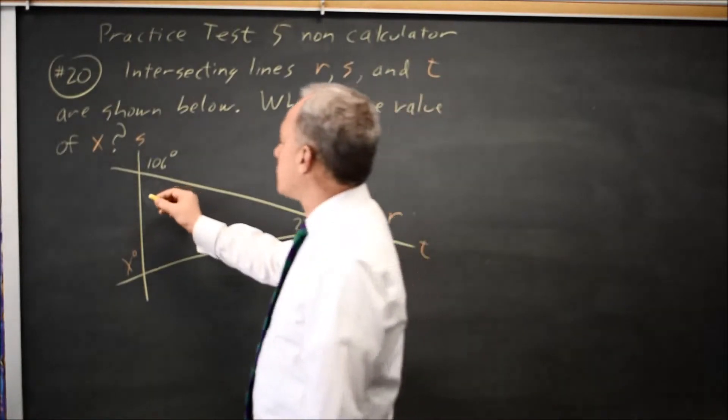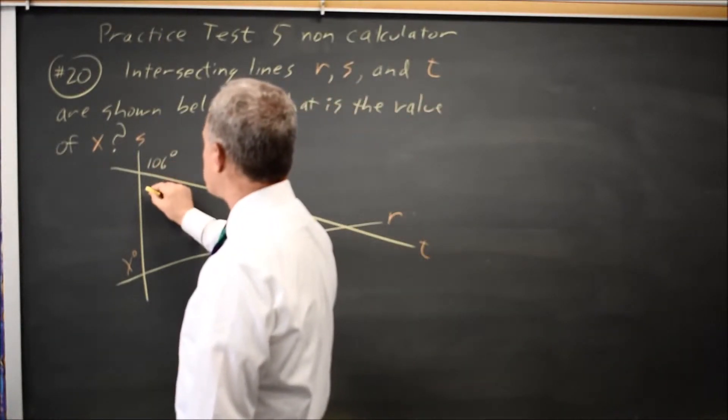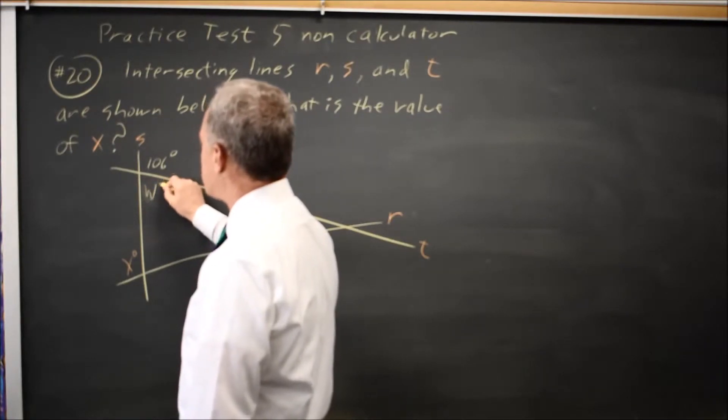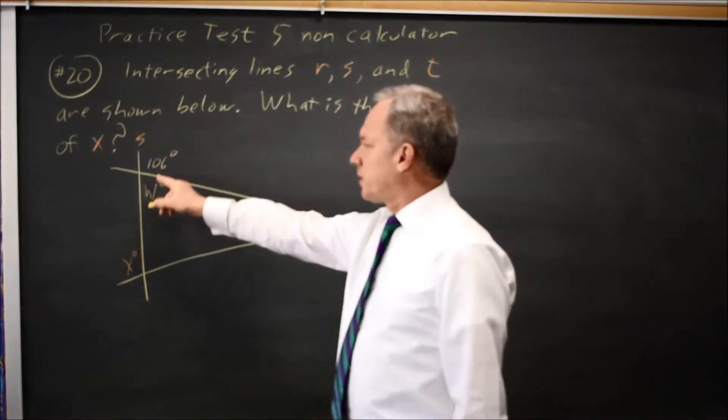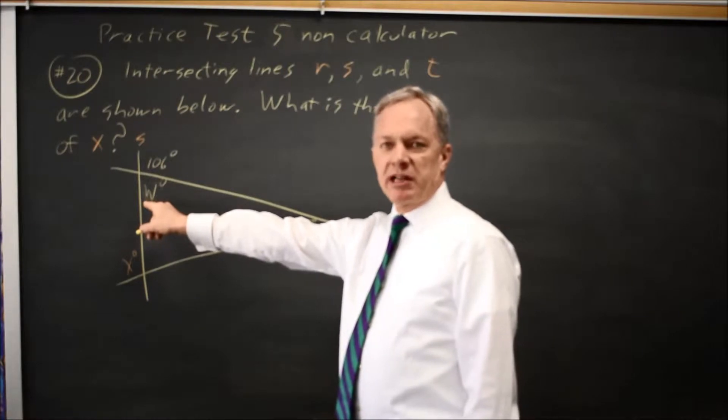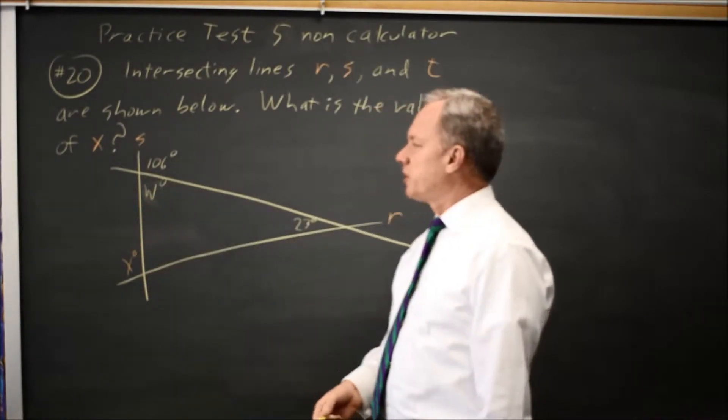In this case, I'm going to work my way inward to complete the triangle by labeling this W, and I know these two angles are supplementary. They add up to 180 degrees because they form a straight angle.